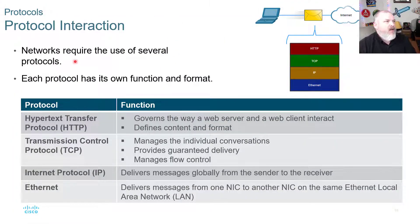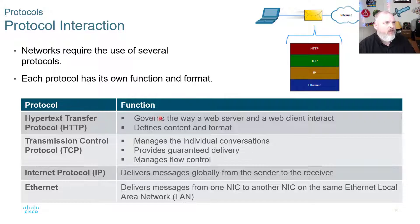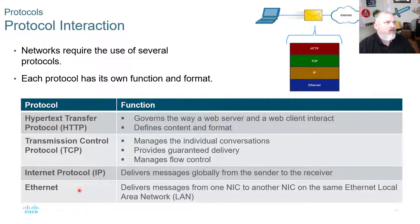Protocol interaction: networks require the use of several protocols, and each protocol has its own function and format. Hypertext Transfer Protocol — HTTP — is most familiar because that's web pages; HTTPS is the secure version. This governs how a web server or web client interacts. Transmission Control Protocol manages individual conversations, provides guaranteed delivery, and manages flow control. Internet Protocol delivers messages globally from sender to receiver. And Ethernet — at layer one — delivers messages from one NIC to another NIC on the same Ethernet local area network.